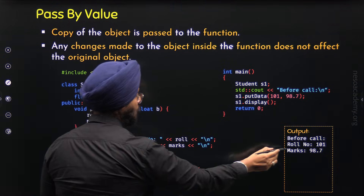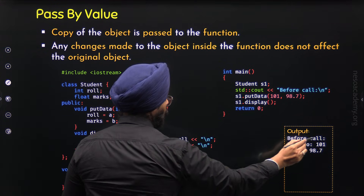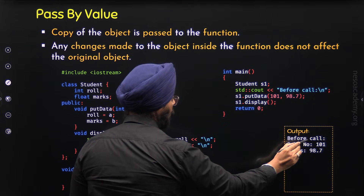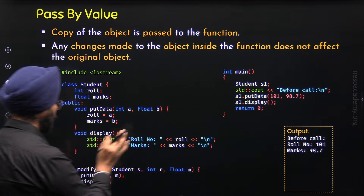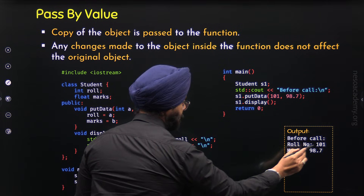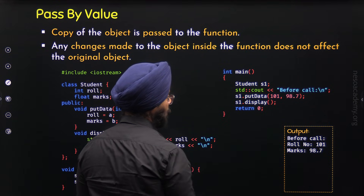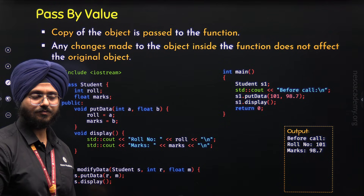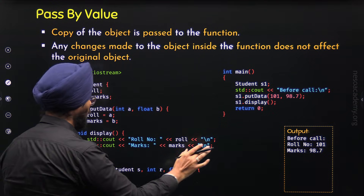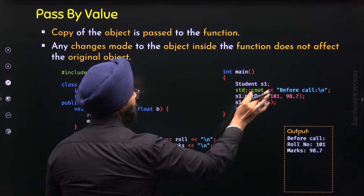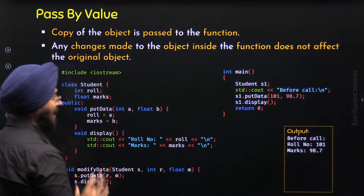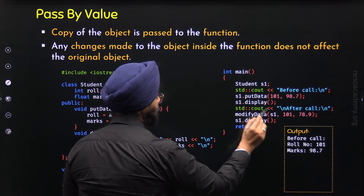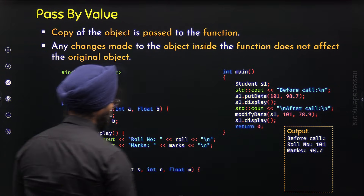Inside the main function, let's define the object of this class and name it S1. Through this object we can call the member functions. I am calling the putData function through S1 and passing 101 and 98.7 to these variables, so role receives 101 and marks receives 98.7. We will get the output: before call, role number 101, marks 98.7.